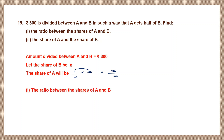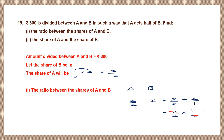The ratio A to B: x/2 divided by x becomes x/2 multiplied by 1/x. We can cancel x, leaving 1/2. So the ratio between the shares of A and B is 1 is to 2.